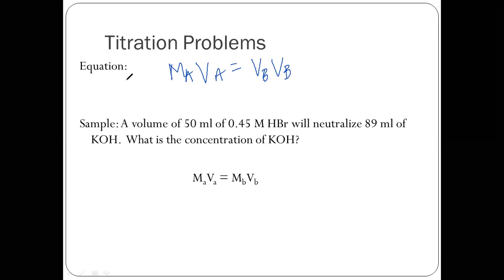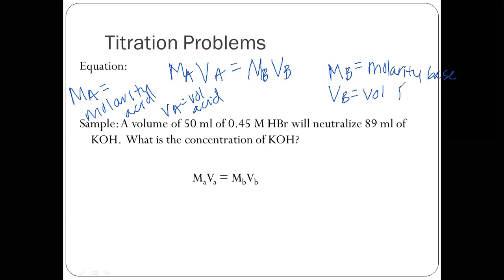So the equation is MAVA equals MBVB. So MA BA is molarity of acid. VA equals volume of acid. MB equals molarity of your base. And VB equals volume of base.